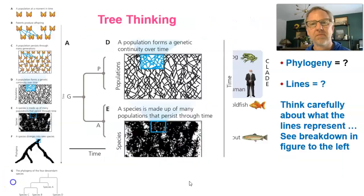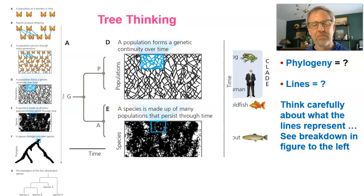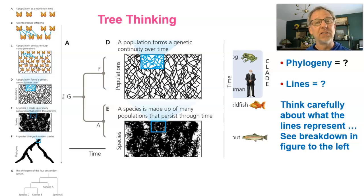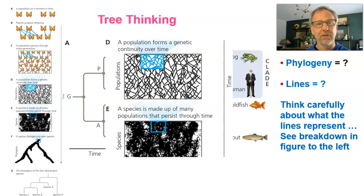A phylogeny is an evolutionary history of a lineage. We take phylogeny as being real — it exists. There is a history of life on this Earth and we all belong to one big family tree. This phylogeny is indeed out there, and as biologists we endeavor to discover it, to understand it. That's a big challenge, because we weren't around to watch this phylogeny unfold.